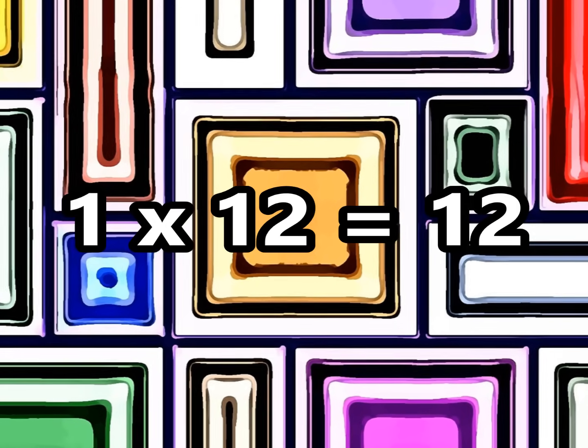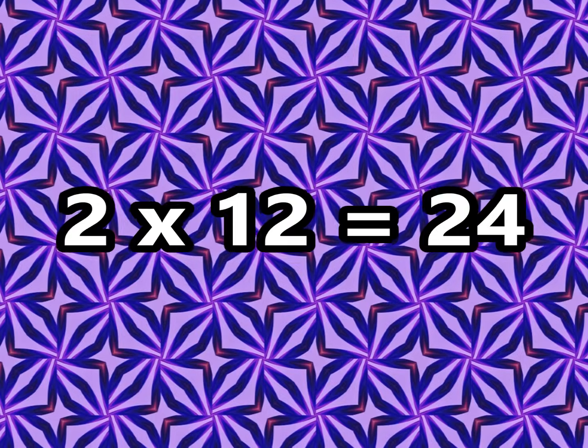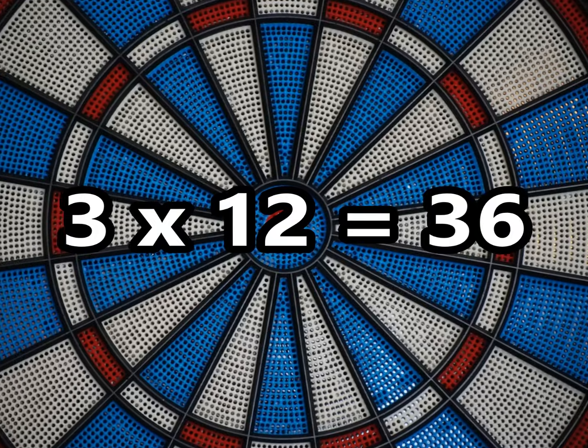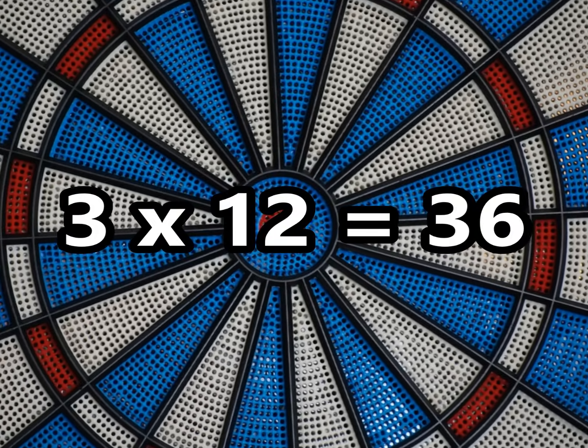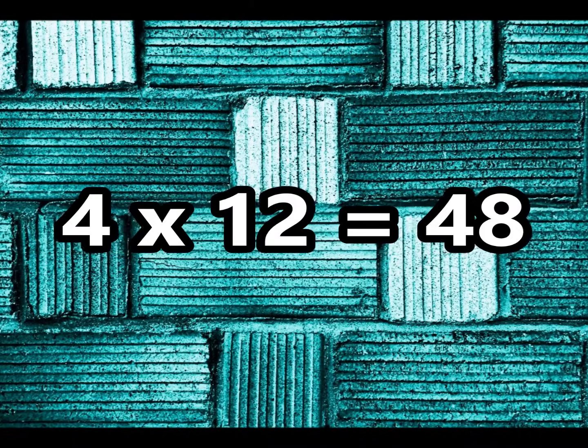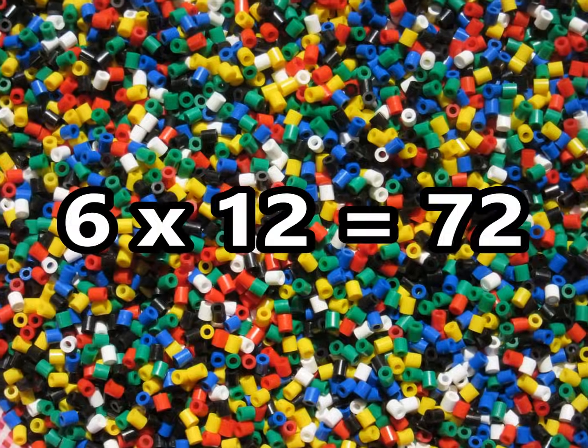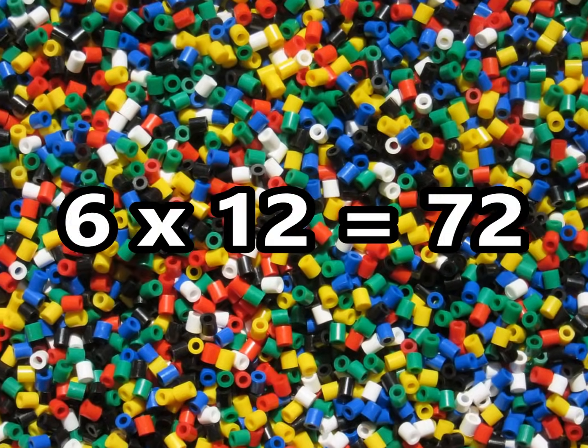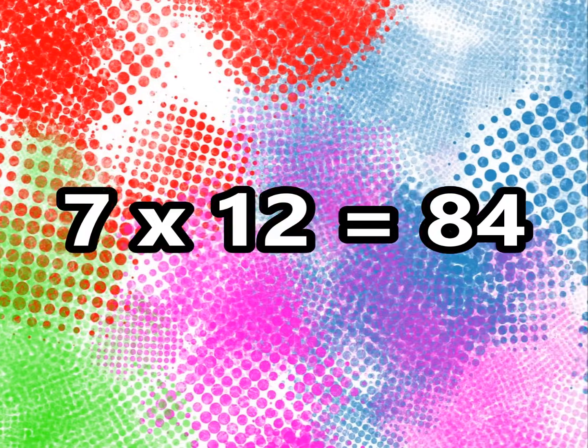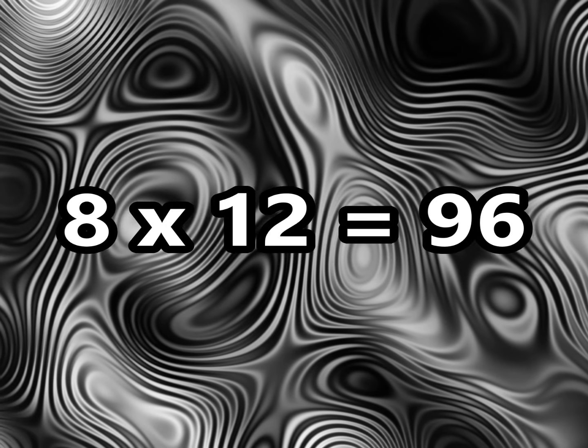1 times 12 is 12, 2 times 12 is 24, 3 times 12 is 36, 4 times 12 is 48. 5 times 12 is 60, 6 times 12 is 72, 7 times 12 is 84, 8 times 12 is 96.